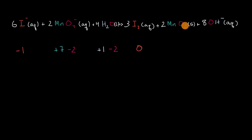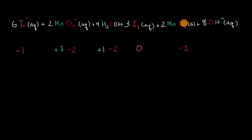Then let's move on to the next compound. Each of these oxygens has an oxidation number of negative two. So what would be manganese's oxidation number? The compound is neutral. Two oxygens at negative two gives negative four. So in order to be neutral, the manganese must be at plus four — an oxidation number of plus four.